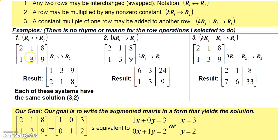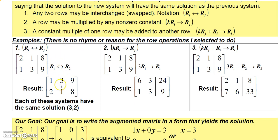Take the system we solved earlier: augmented matrix 2, 1 | 8 for the first row and 1, 3 | 9 for the second row. The solution is x = 3, y = 2. If we swap row 1 with row 2 — shown by a double arrow — the solution does not change. The fact that these are legal row operations means performing them will not alter the solution, which remains x = 3, y = 2.